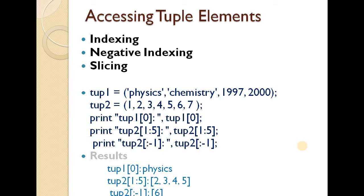Accessing tuple elements is done using three methods: indexing, negative indexing, and slicing. For example, with the tuple ('physics', 'chemistry', 1997, 2000), elements are accessed by indices 0, 1, 2, 3 in positive indexing.